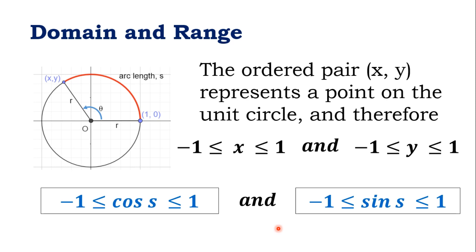Now, let's look further at the domain and range of a circular function. The ordered pair (x,y) at the second quadrant represents a point on the unit circle such that, as the arc is rotated, your x will always be in the range from negative 1 to 1. We cannot have a value of x less than negative 1 or greater than 1.